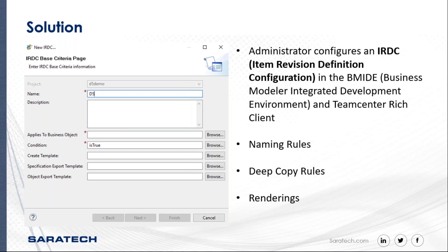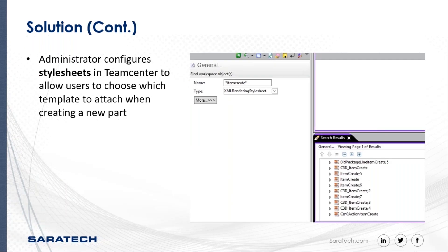We can also use deep copy rules, which are essentially behaviors between revisions. For example, if we have Revision A with a filled-out Excel document, but on the subsequent revision we want a fresh template with no prior data, we can configure that here. Renderings are another aspect — we can create a format conversion from a Word or Excel document to a PDF without touching anything manually. Style sheets are another component, not on the back end but within Teamcenter itself. They control the display of Teamcenter — for instance, the dialog box that appeared when creating an item, including the template dropdown — and those are configured by an administrator.